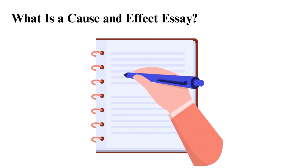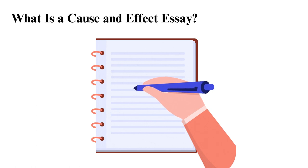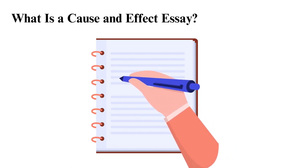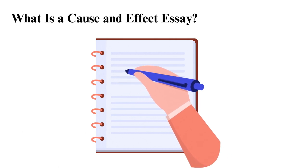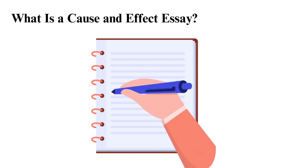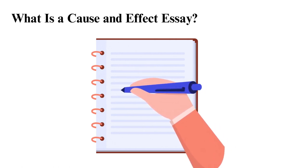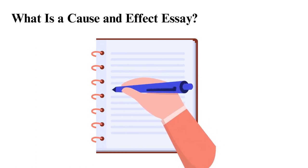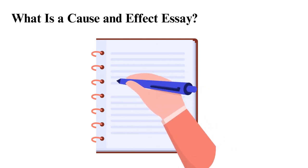To earn a good score in a Cause and Effect Essay, you need to have an excellent, interesting, and thought-provoking topic. Then meticulously show how certain factors have influenced the occurrence of specific events. The cause and effect essay should have the structure of a general essay: an introduction, body, and conclusion.